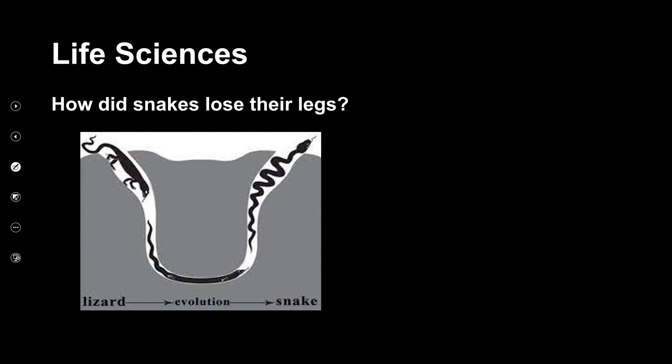According to one of the theorists, Lamarck, he says that snakes were lizard-like creatures. And as they went into burrows, they used their legs because they used to wiggle in the narrow burrow. And that is how they didn't use their legs, so they lost the actual use of the limbs.